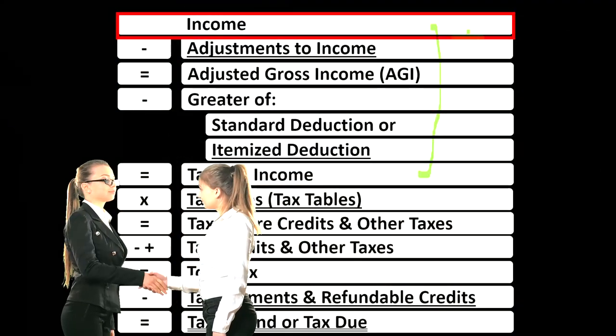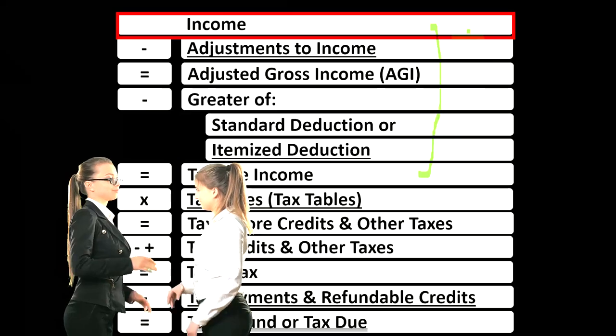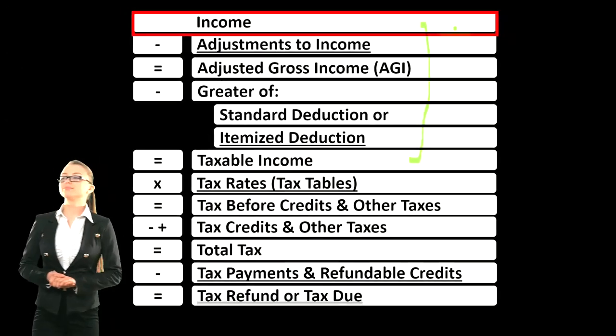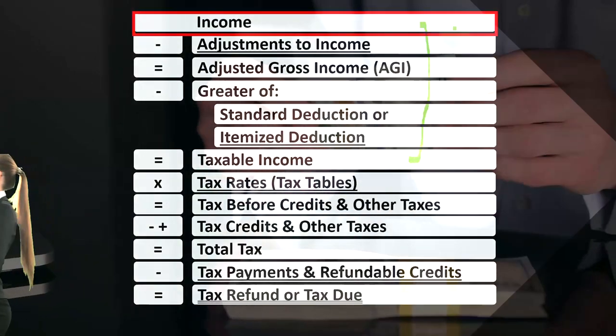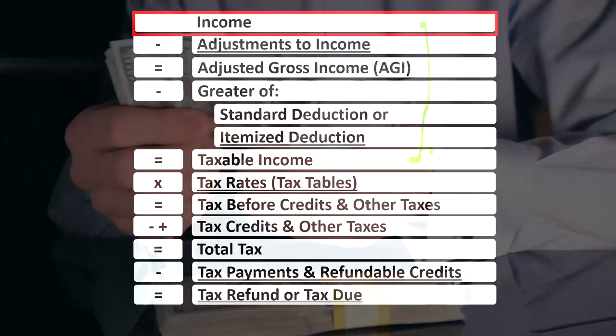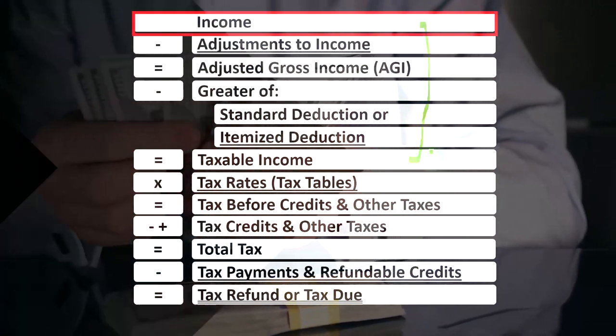We still have income minus expenses, but the expenses are basically called deductions now, to get us down to not the net income, but the taxable income.